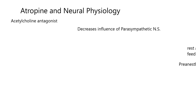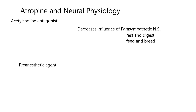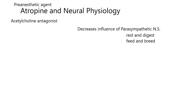As a reminder, the parasympathetic nervous system is sometimes called the rest and digest system, and some people call it the feed and breed system. The sympathetic nervous system is the fight or flight system, so the parasympathetic deals with things at rest, digestion, and reproduction. Because of these actions on the nervous system, atropine is often used as a pre-anesthetic agent.